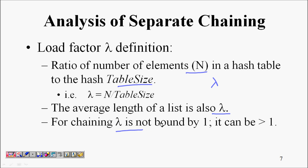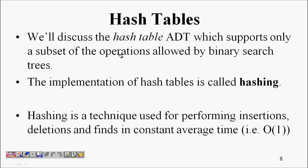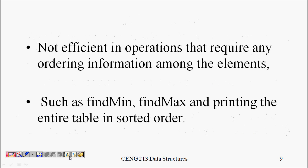For chaining, λ can be greater than 1. For example, if the hash table size is 10 and there are 100 elements, each list will have on average 10 elements.